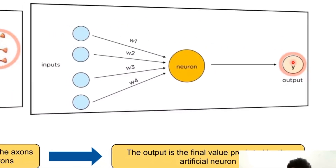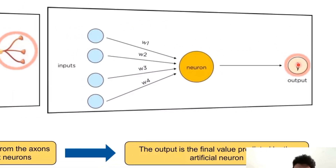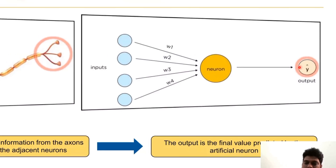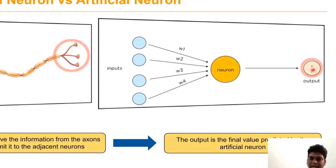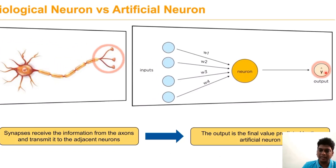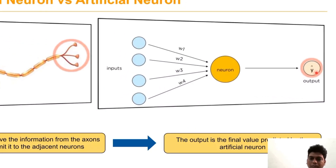In the case of the artificial neuron, we use the output as the final element — this is where we predict the output.